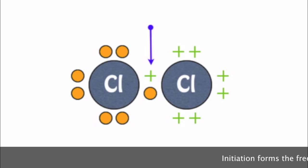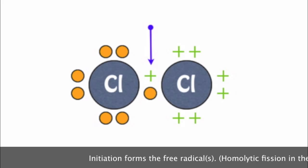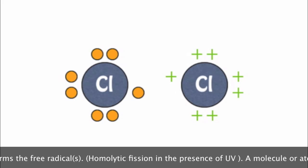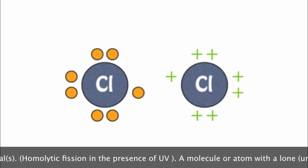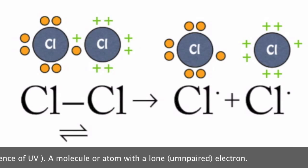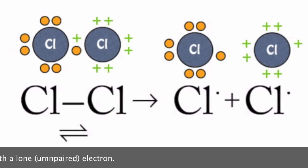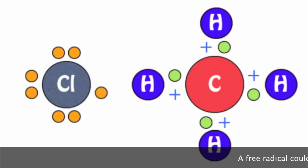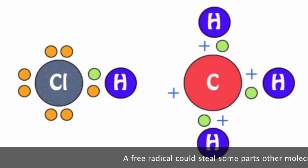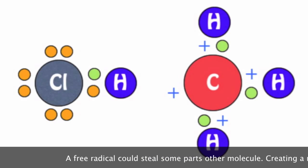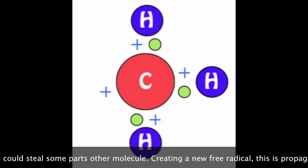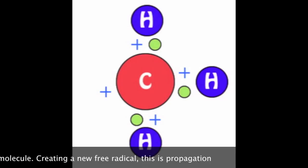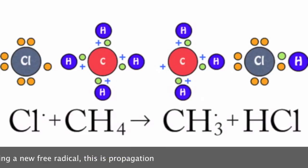Initiation forms a free radical — an atom or molecule with a lone unpaired electron. A free radical can steal part of other molecules, creating a new free radical. This is propagation.